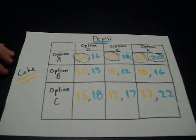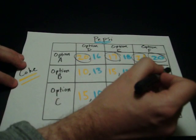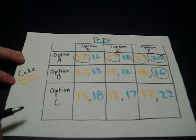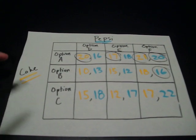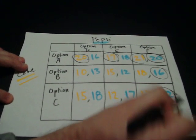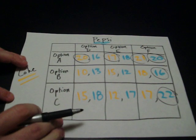As Pepsi, if we think that Coke is going to pick option B, again, they would want to pick option F to get $16, rather than $12, rather than $13. And if we think that Coke is going to pick option C, Pepsi in response would want to pick option F to get $22, rather than $17, rather than $18.